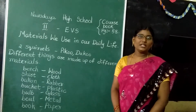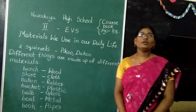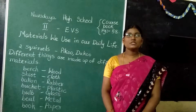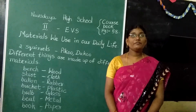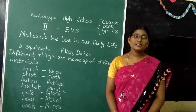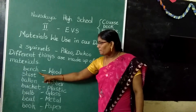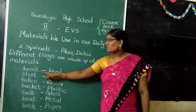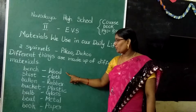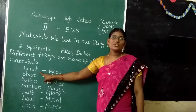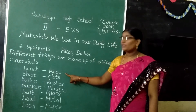Now listen children. In our surroundings, in our houses, in our classrooms, we see different kinds of things made up of different materials. Look at the bold ones. Here — bench. Bench is made up of which material? Yes, wood. Benches and chairs are made up of wood.